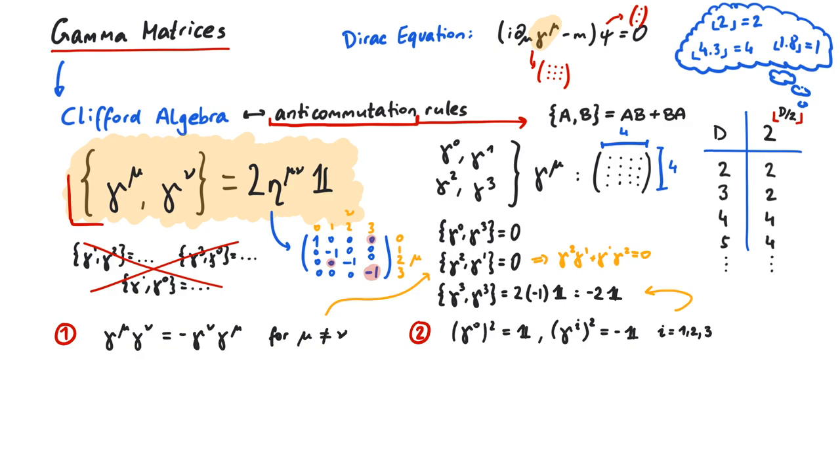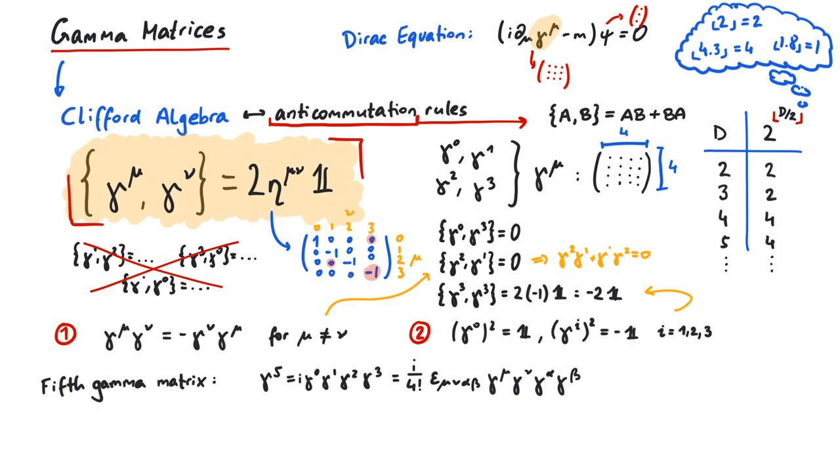There we have it. Using this anticommutation relation, you will be able to solve most of the problems you encounter. Actually, there is one more gamma matrix called gamma 5. You can calculate it either as a product of all other gamma matrices or via the Levy-Civita epsilon symbol. The interesting thing about this matrix is that its anticommutators with all other gamma matrices are zero.